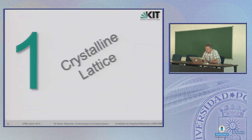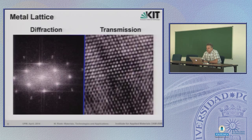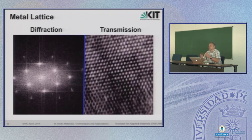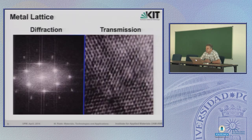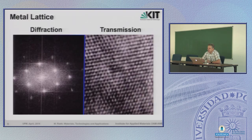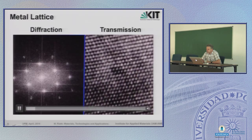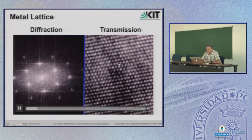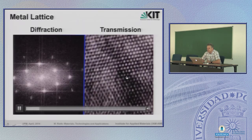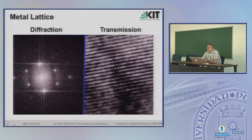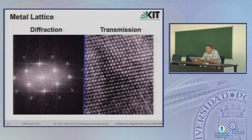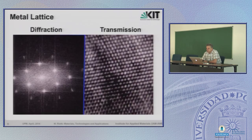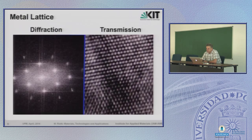Let's start with the crystalline lattice in metals. It's possible by transmission electron microscopy to visualize even single atoms. If you screen through the lattice, here are the single atoms — they are arranged in a lattice structure, and by diffraction of electrons you see these diffraction patterns. This is why we know that metals are structured by a lattice.